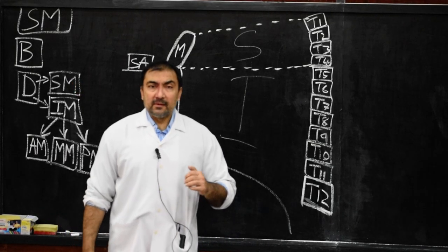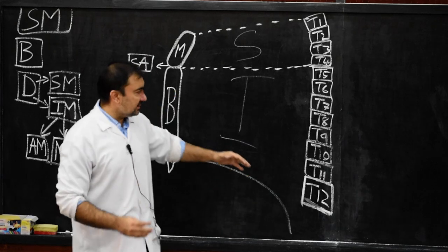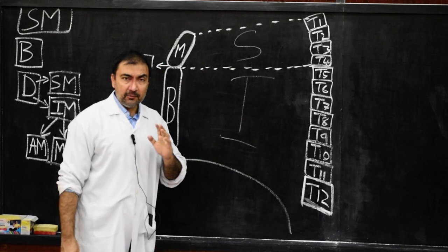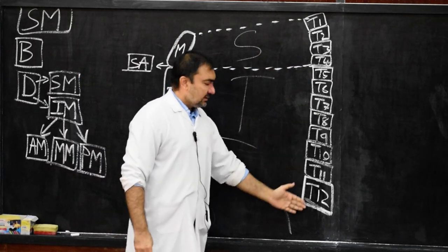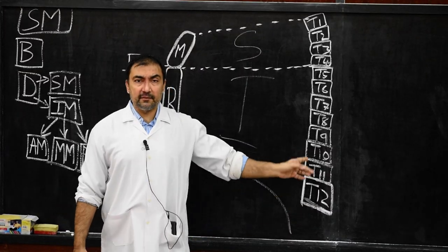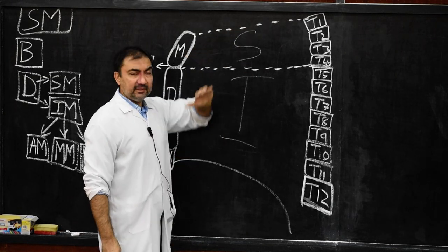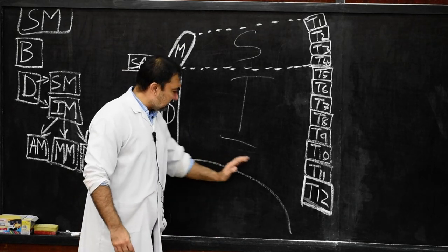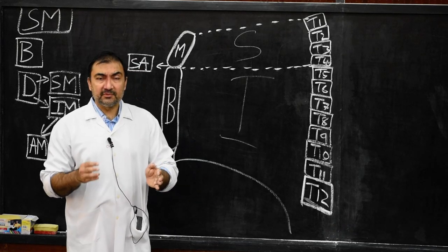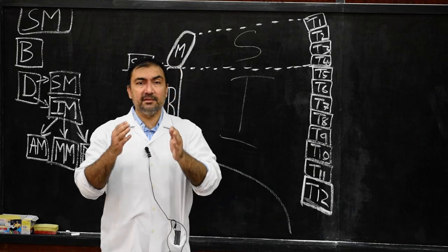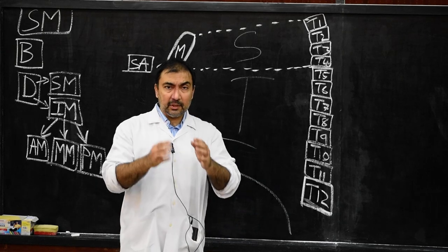The entire boundaries of the mediastinum — if you consider both mediastina together, superior and inferior — the boundaries will be: anteriorly, it is bounded by the sternum; posteriorly, it is bounded by the 12 thoracic vertebrae including intervertebral discs; superiorly, it is bounded by the thoracic inlet; inferiorly, it is bounded by the diaphragm; and on either side, right and left, it is bounded by the right and left pleural sacs, that is the mediastinal pleura.